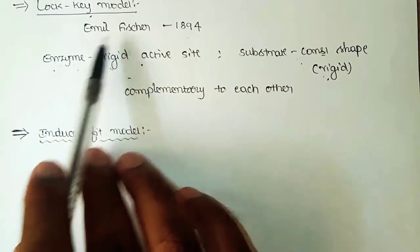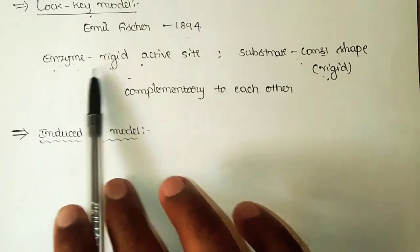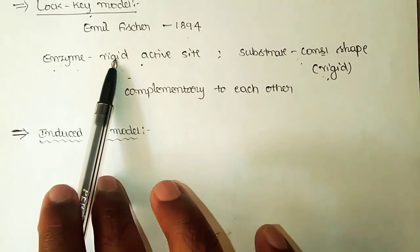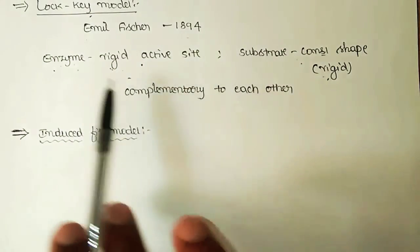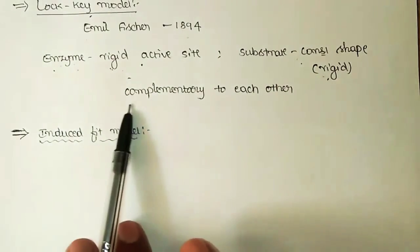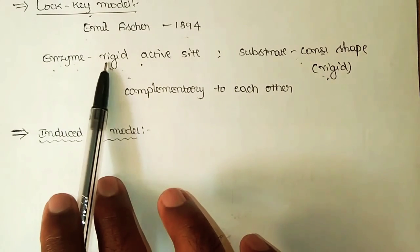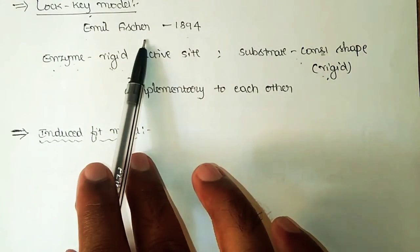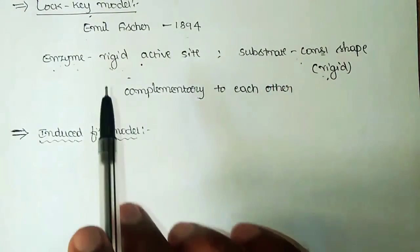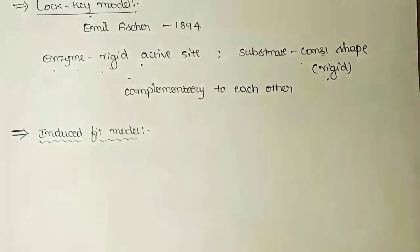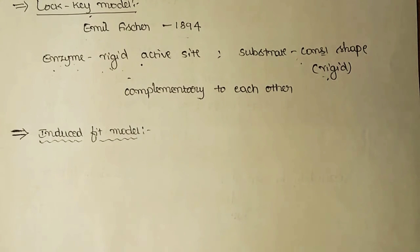In the lock and key model, both the conformation of the active site of the enzyme and the conformation of the substrate remain rigid, and only enzyme and substrate whose conformations are exactly complementary to each other can interact to form an enzyme-substrate complex, which upon decomposition produces the product. However, in actuality, the active site conformation of the enzyme is not rigid at all.